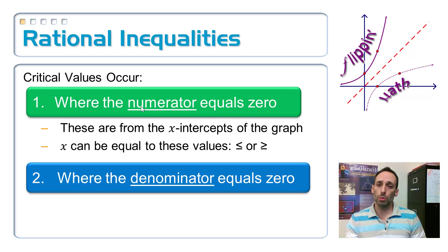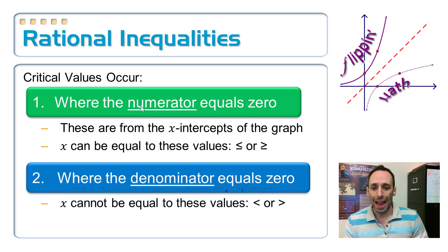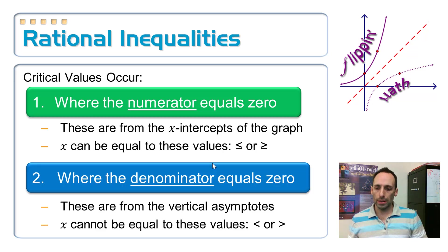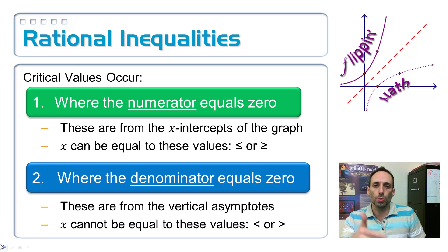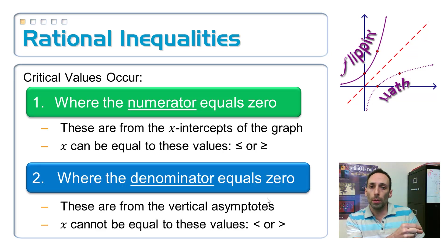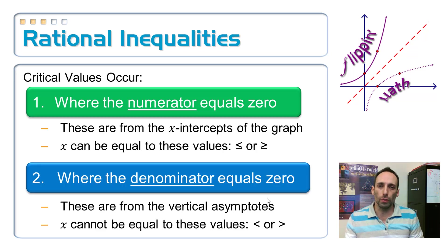Step three: put all of those critical values on a number line and pick the intervals — which ones make the original inequality true? Let's try that on Exercise 8. Step one: make this equal to zero. I need to get −4 over to the left-hand side. So I have 6/(x − 2) + 4 = 0. I don't want to multiply through by the common denominator, because I need to find where the denominator equals zero. So I'll just add the fractions.